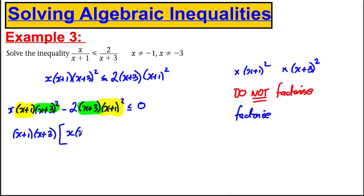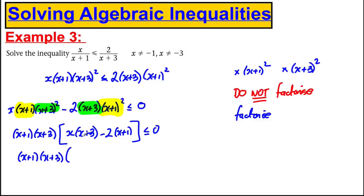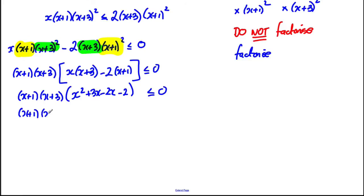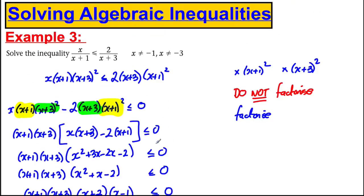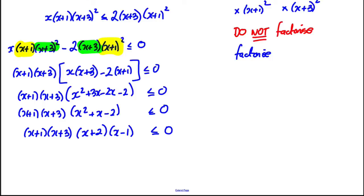After factorizing out (x plus 1)(x plus 3), we're left with (x plus 1)(x plus 3)[x(x plus 3) minus 2(x plus 1)] is less than or equal to zero. Tidying up the bracket gives (x plus 1)(x plus 3)(x squared plus x minus 2) is less than or equal to zero. Factorizing the quadratic term gives (x plus 1)(x plus 3)(x plus 2)(x minus 1) is less than or equal to zero.